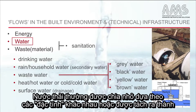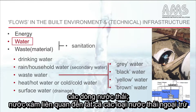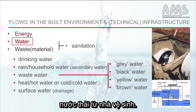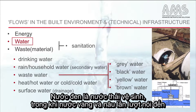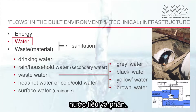Wastewater is subdivided often according to different qualities or separated wastewater streams. It can be grey water, which concerns all wastewater except toilet wastewater; black water, which is the toilet wastewater; while yellow and brown water concern separated urine and feces flows.